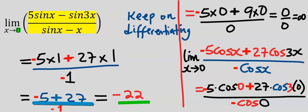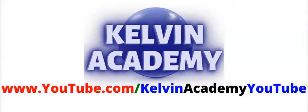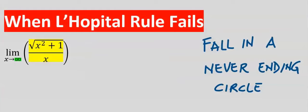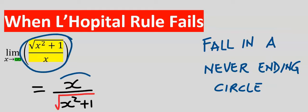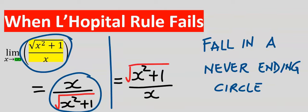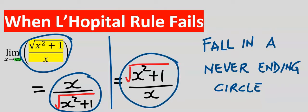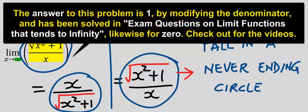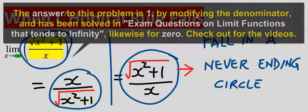L'Hôpital's rule requires us to keep differentiating until we get an answer. However, L'Hôpital's rule will fail in a function that falls in a never-ending circle — for example, if you differentiate a function and get its inverse, then differentiate again and get back the original question. This is a never-ending circle, and in such a case L'Hôpital's rule fails.